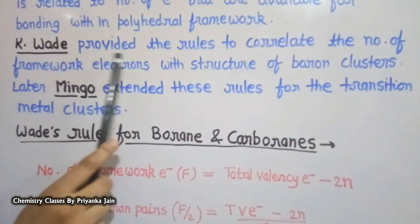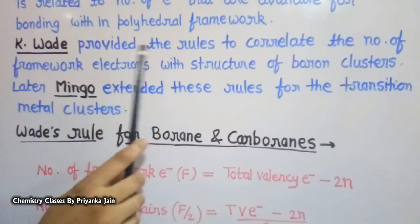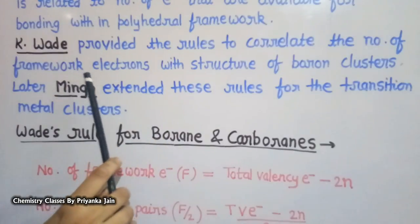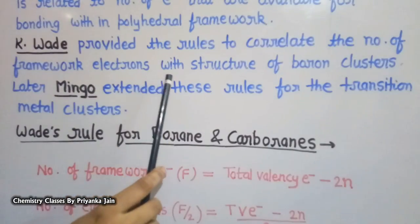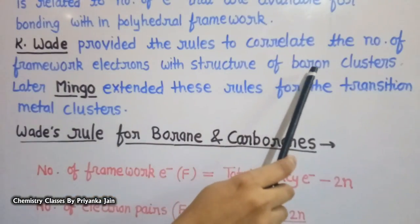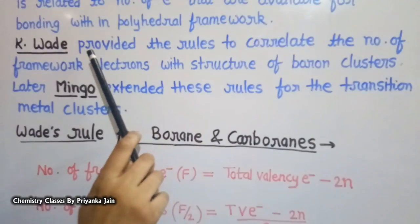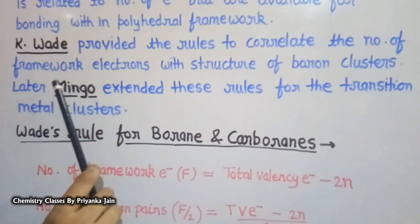The type of structure adopted by a particular compound is related to the number of electrons available for bonding in the polyhedral framework — these are called the framework electrons or skeleton electrons. K. Wade provided the rules to correlate the number of framework electrons with the structure of boron clusters, and these rules are known as Wade's rule.